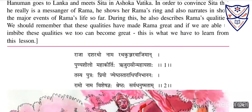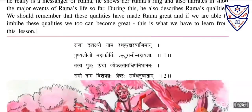So Hanuman told the story of Rama — what he has done from childhood up to that time — to prove he was really the messenger of Rama and earn her trust. He narrates Rama's story, knowing events that only Ram, Sita, and Lakshman could know. This was done so that Sita could trust him. He knows Rama's deeds and also narrates in short the major events of Rama's life so far.